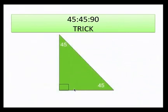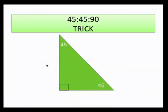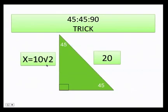Let's practice the shortcut. If the hypotenuse is 12, divide by 2 to get 6, so each leg is 6√2. If the hypotenuse is 20, divide by 2 to get 10, so each leg is 10√2. If the hypotenuse is 4, divide by 2 to get 2, so each leg is 2√2.